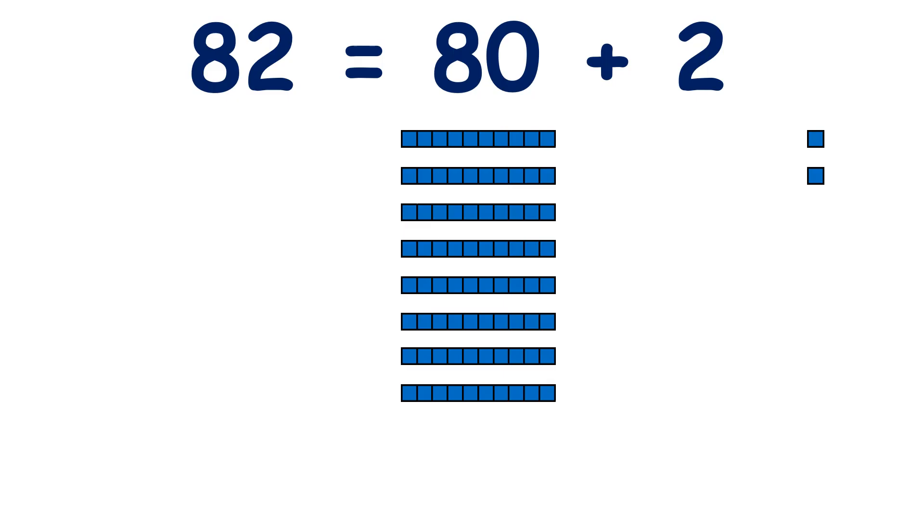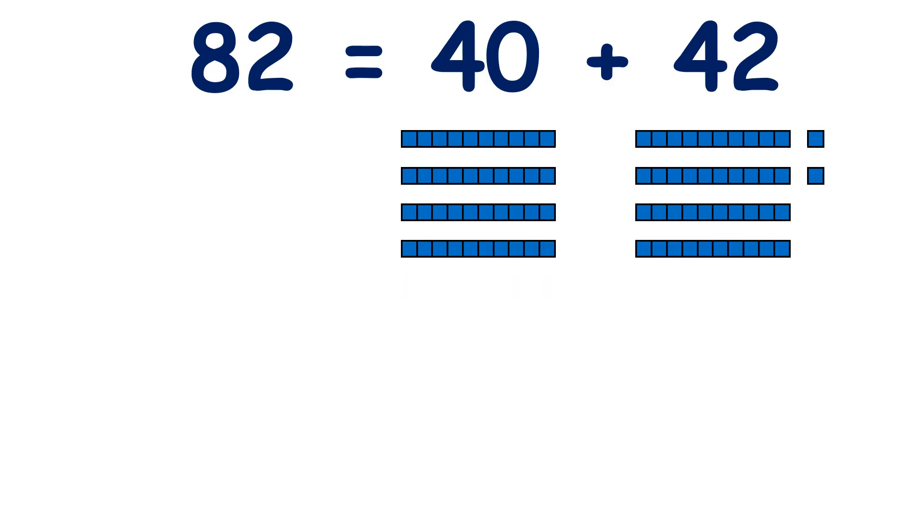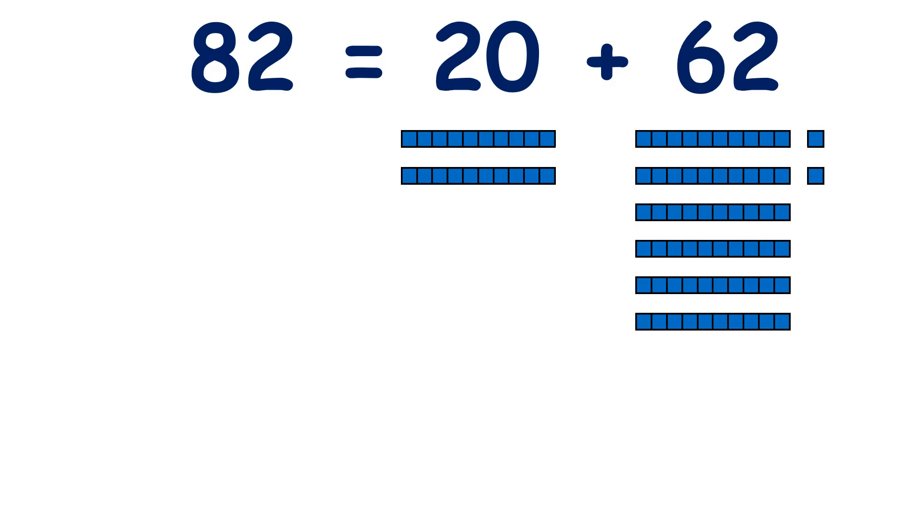We could have 70 and 12, 60 and 22, 50 and 32, 40 and 42, 30 and 52, 20 and 62, or 10 and 72.